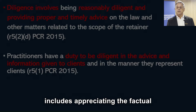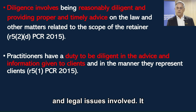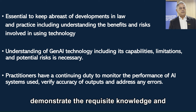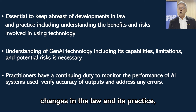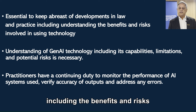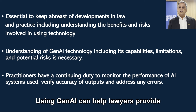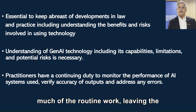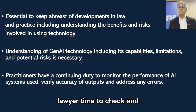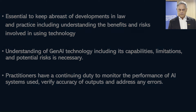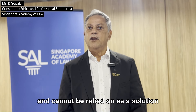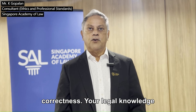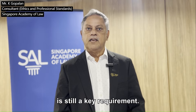Competent handling of any matter includes appreciating the factual and legal issues involved and requires adequate preparation. To demonstrate the requisite knowledge and skill, a lawyer needs to keep abreast of changes in the law and its practice, including the benefits and risks associated with relevant technology. Using Gen AI can help lawyers provide competent and diligent representation of their client. Gen AI can do much of the routine work, leaving the lawyer time to check and improve on the output. However, Gen AI is a tool and cannot be relied on as a solution for diligence. Lawyers must still check the output from Gen AI for correctness. Your legal knowledge is still a key requirement.